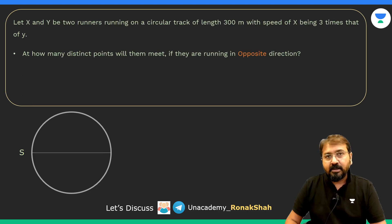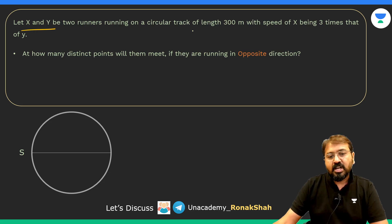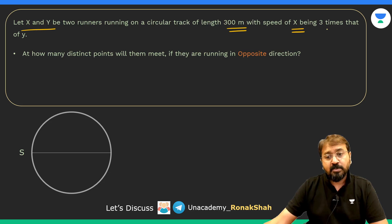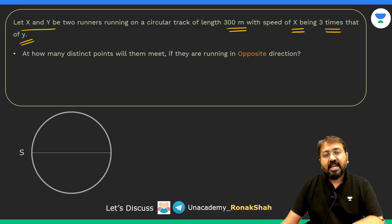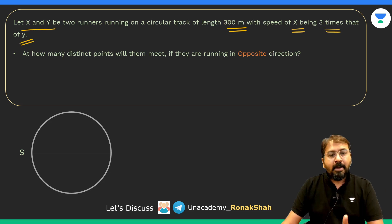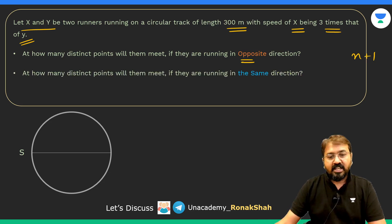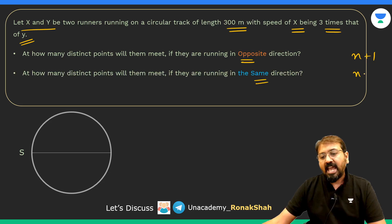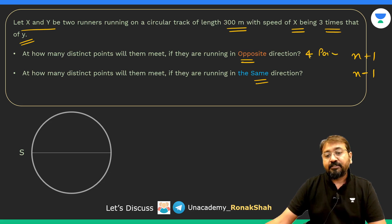Now let's understand how to find the number of meeting points. If the faster runner's speed is N times the slower one's speed, then if they are running in the opposite direction there will be N plus 1 meeting points, and if running in the same direction there will be N minus 1 meeting points. In our case with speed ratio 3:1, opposite direction gives 4 meeting points and same direction gives 2 meeting points.